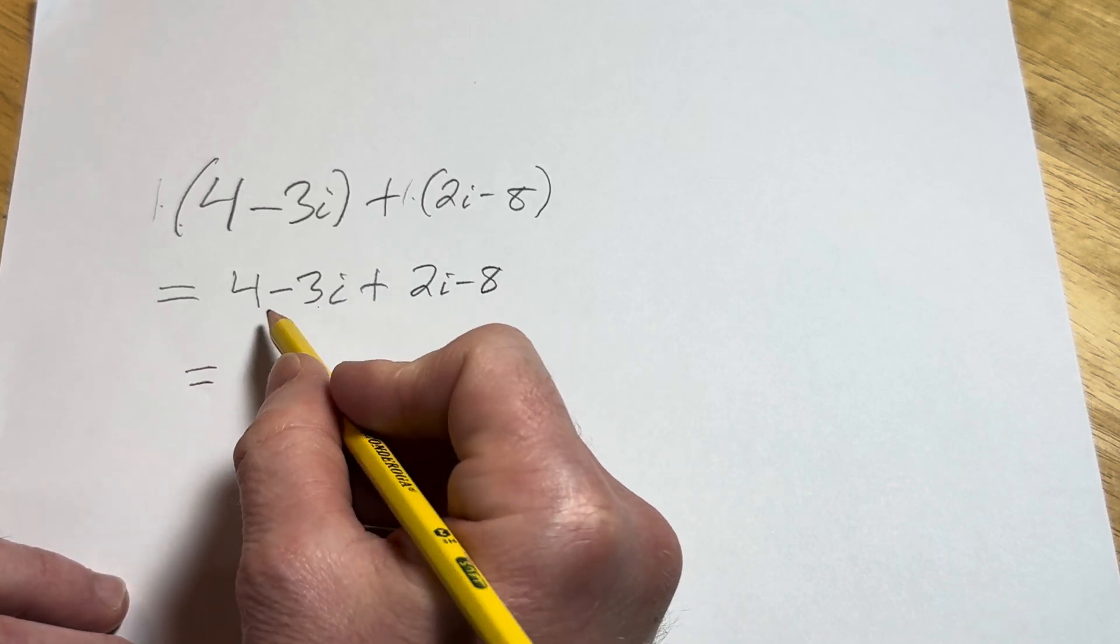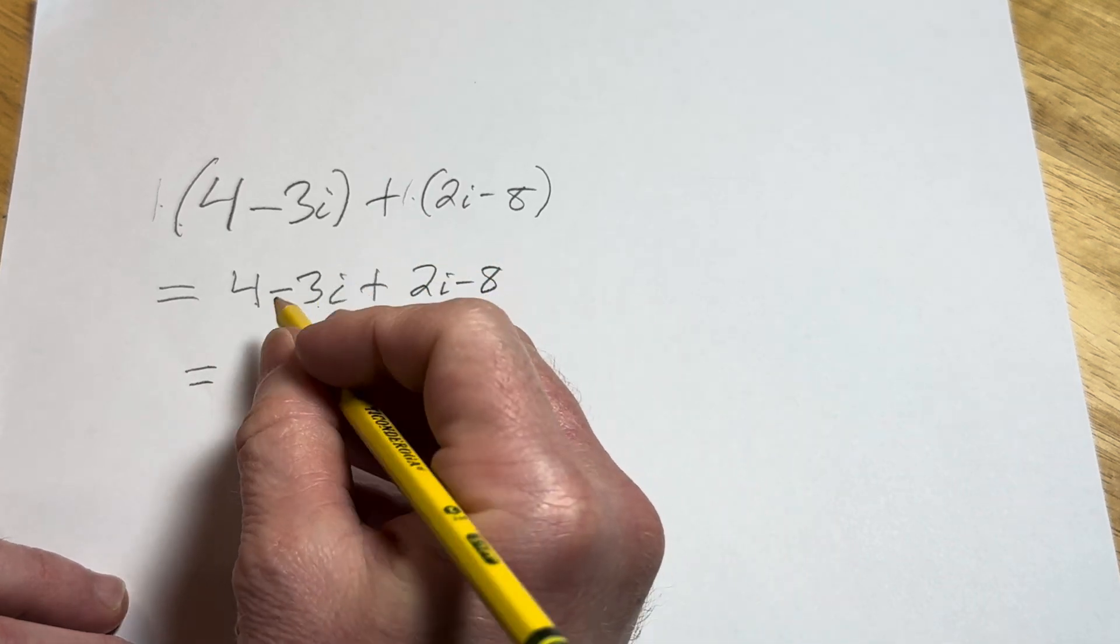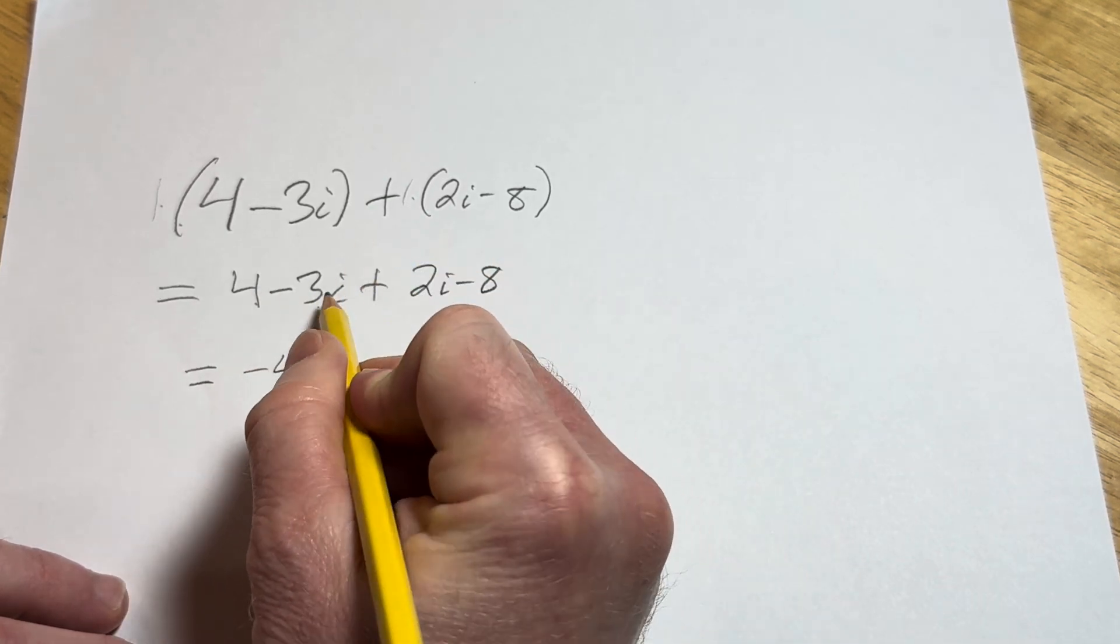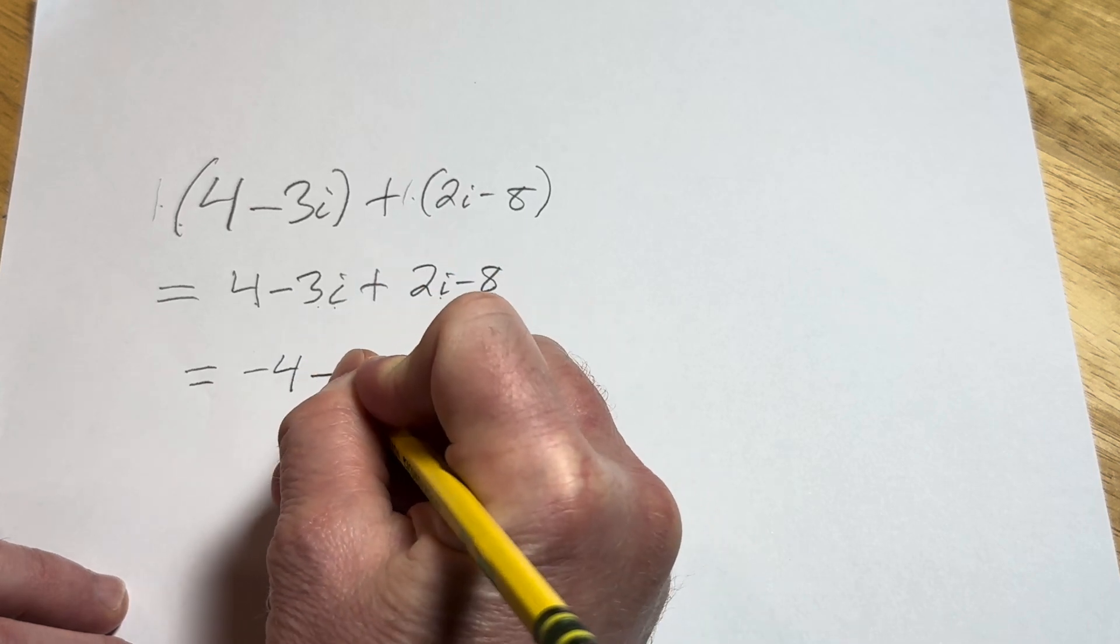So the real numbers in this case would be 4 minus 8, so that's negative 4. And then negative 3i plus 2i, that's going to give us minus i.